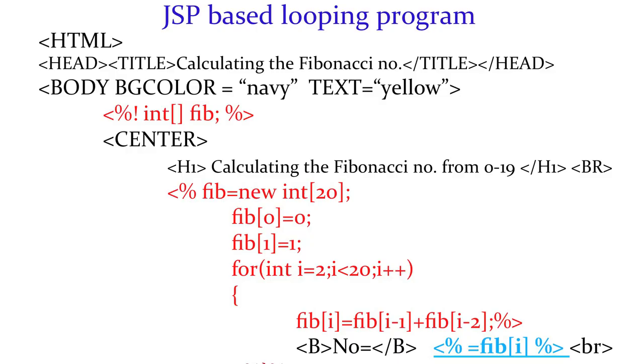Now I am showing you some more complex programs — looping type programs. In this program, the red portion represents JSP code, the black portion is HTML, and the blue portion is JSP output statements. The program starts with an HTML tag, then a head section with the title 'Calculating the Fibonacci Number', and then the title and head are closed.